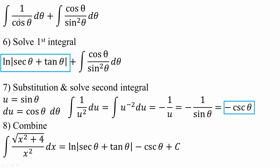Next we can solve the first integral. The integral of 1 over cosine theta is the integral of secant theta, and the integral of secant theta equals ln of the absolute value of secant theta plus tan theta, plus c. Then we have plus the integral of cosine theta divided by sine squared theta d theta.